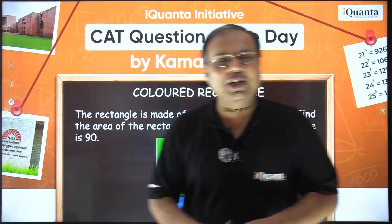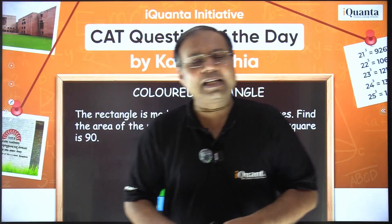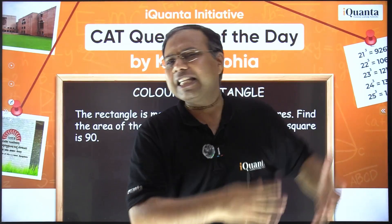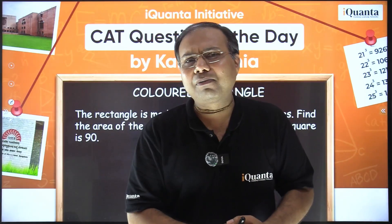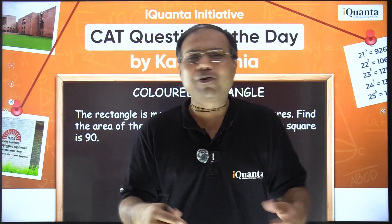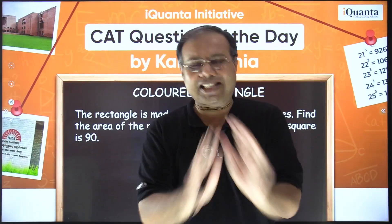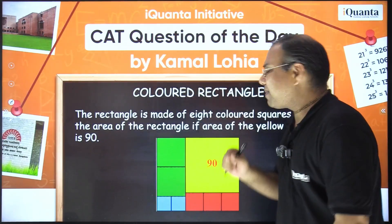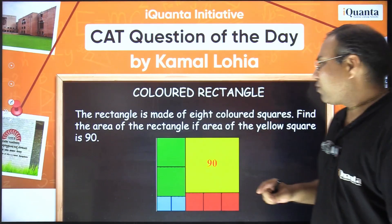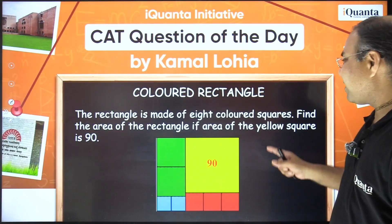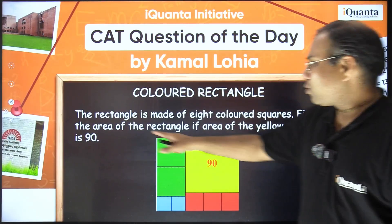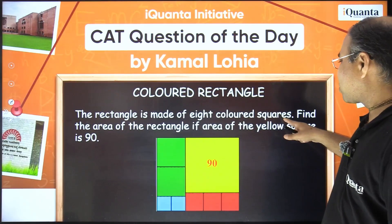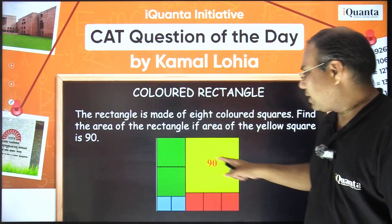In CAT, they generally don't ask for any fancy formulae or equations — they just use basic concepts. So let's see how we can solve this question. The rectangle is made of eight colored squares: a yellow one, two green squares that are equal, two blue squares that are equal, and three red squares that are equal.